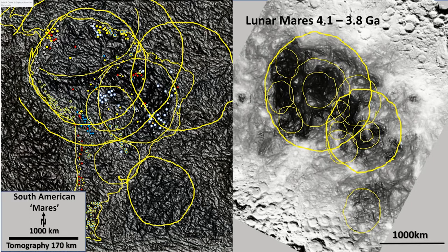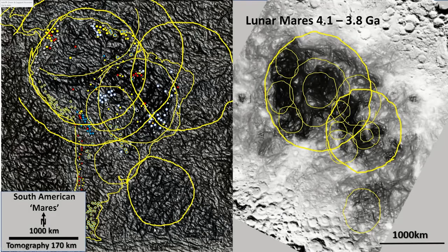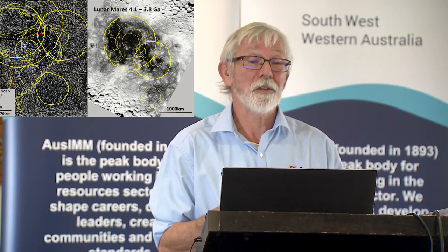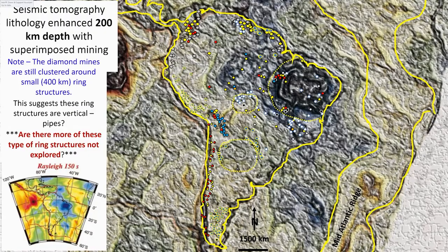Now these rings that I've just shown you are similar in size and almost exactly the same density and filled with lavas as what the ones on the moon are — further confirmation that these things are late heavy bombardment. These rings here are the ones that we just saw — in fact there's two or three rings here, and then the major ring sits right around here. The smaller rings are still exactly the same as what we see on the lunar mares, which we know formed 4.1 to 3.8 billion years ago — further evidence that the Earth formed in exactly the same way.